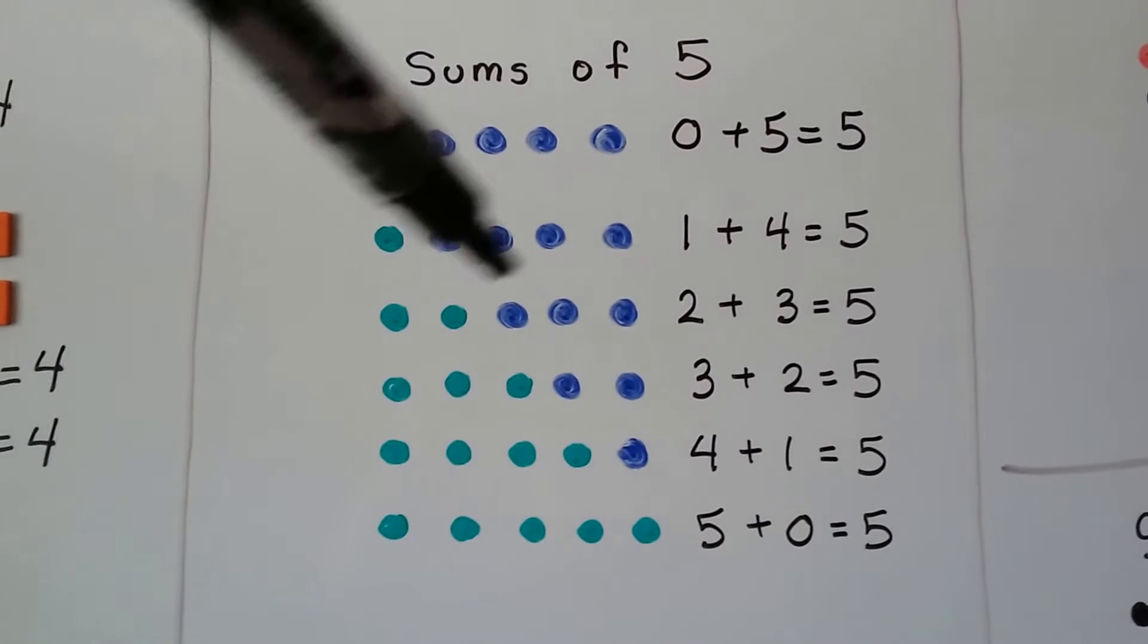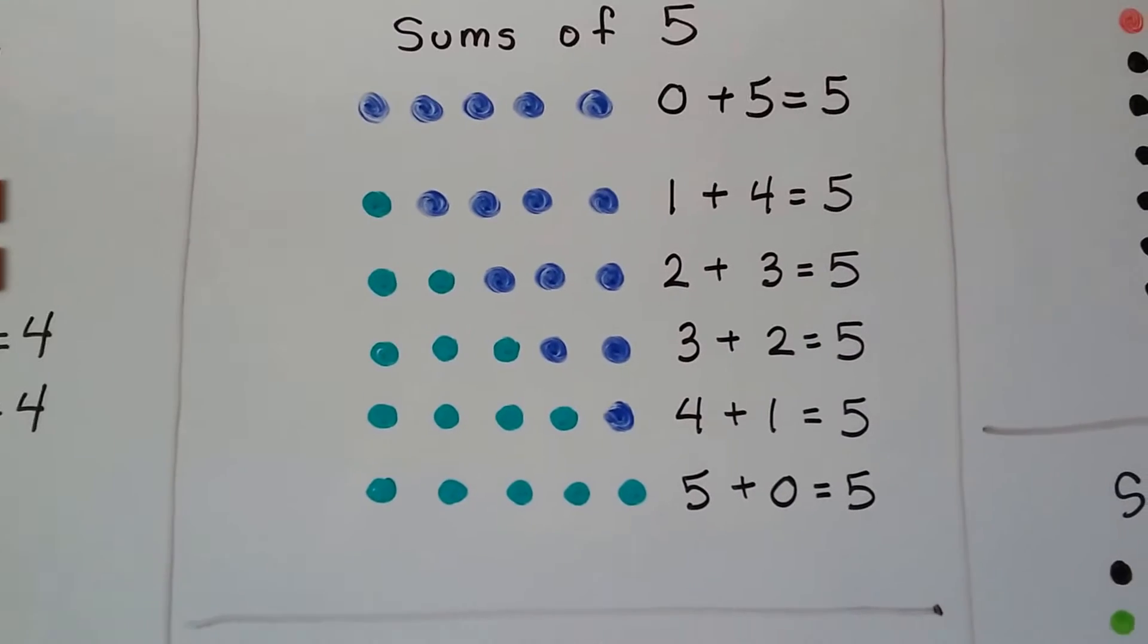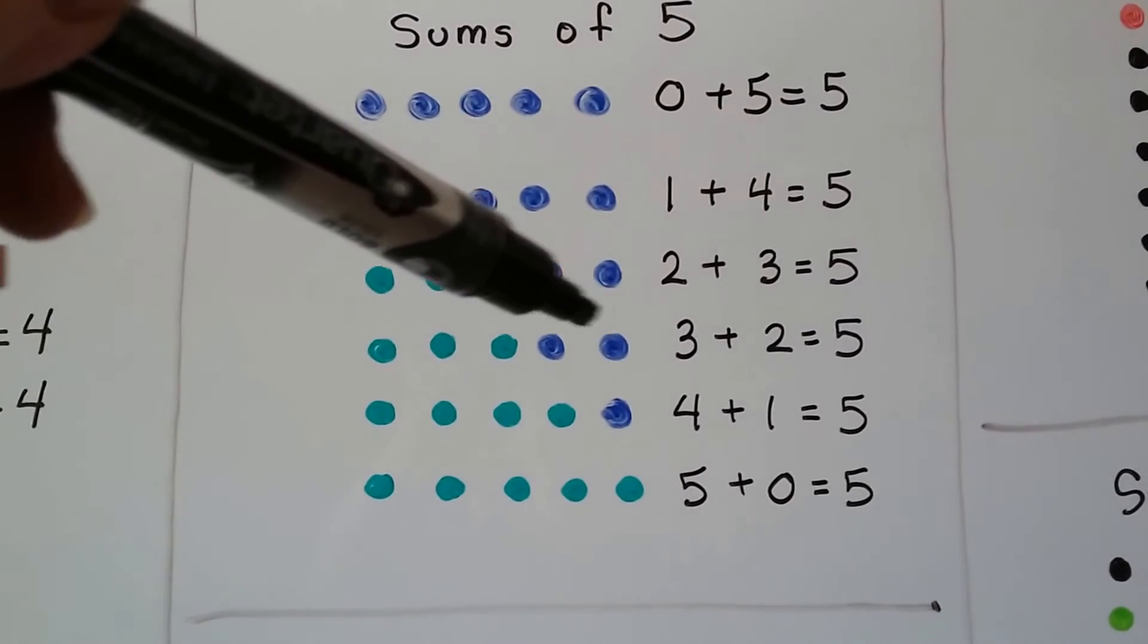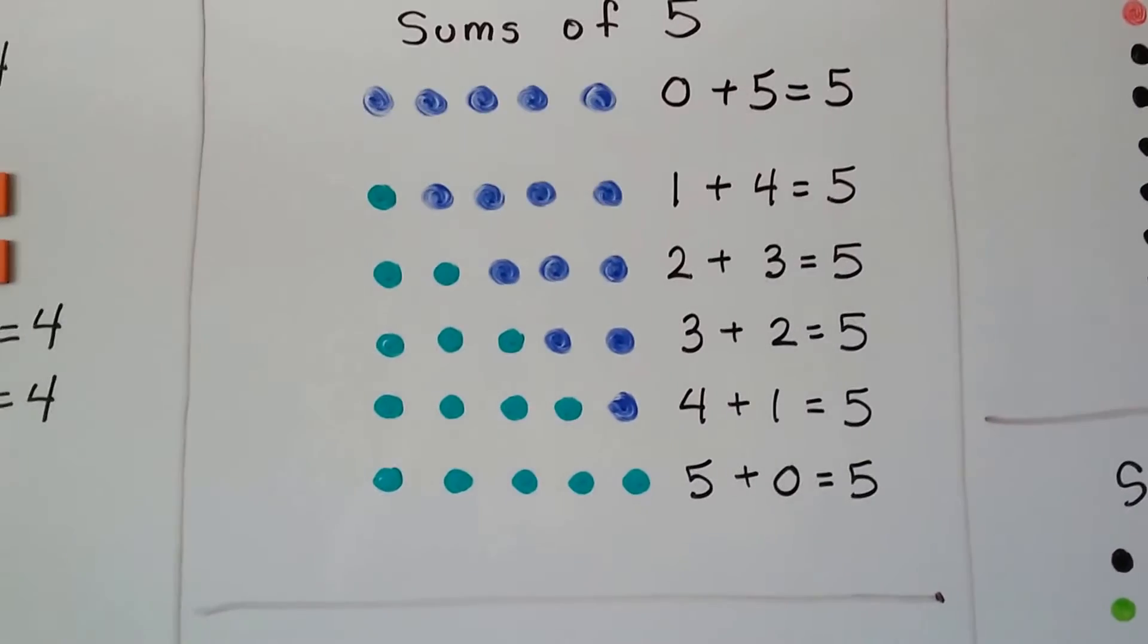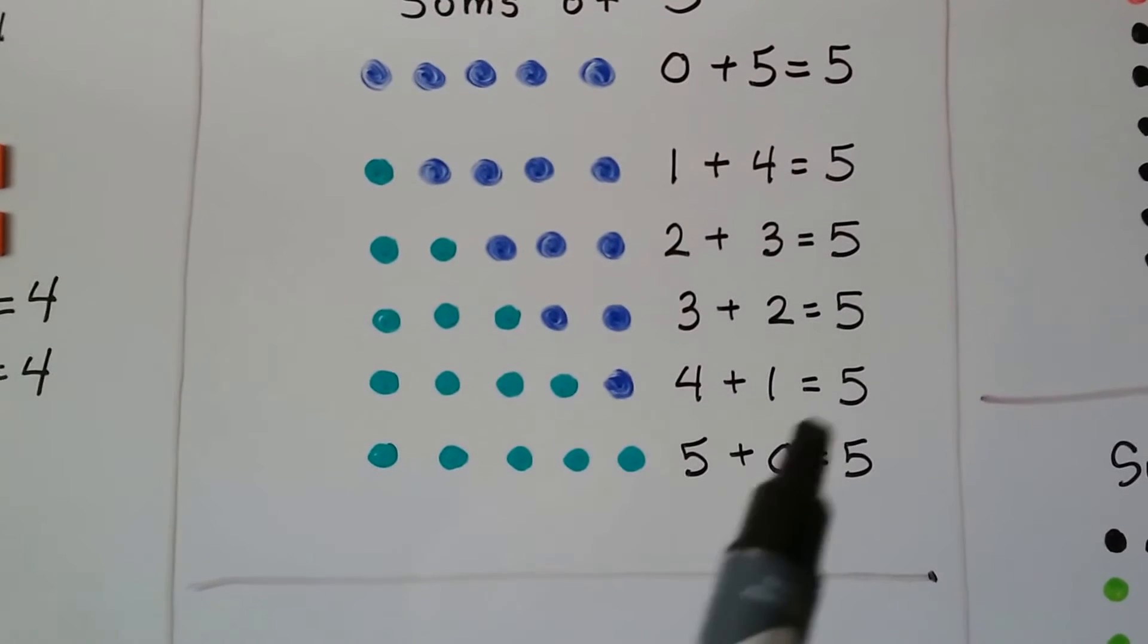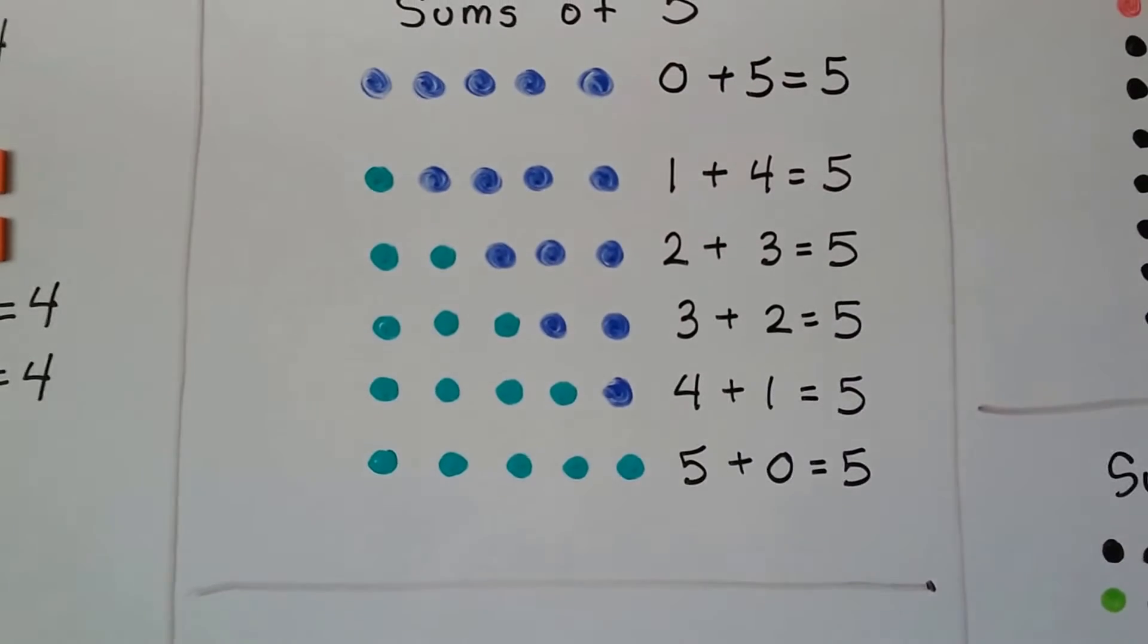Now we have two green dots. See, there's the two and three blue dots. We have five. Now we have three green dots and two blue dots, and it still equals five. Now we have four green and one blue. That equals five.